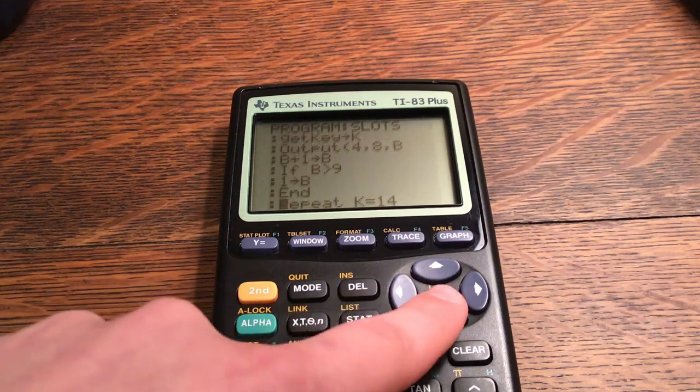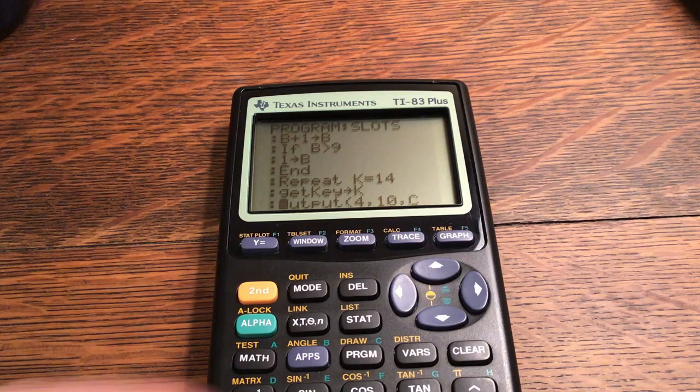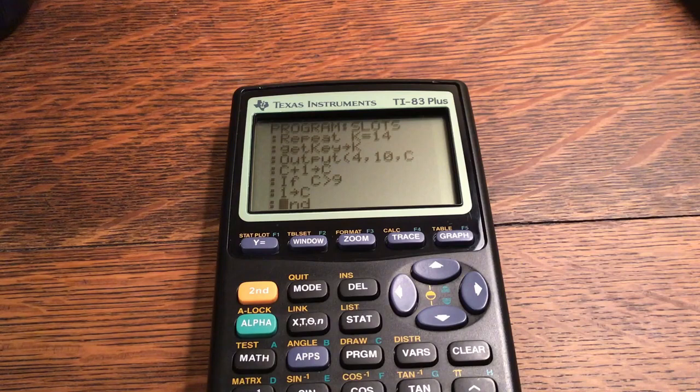Repeat until K is equal to 13. Get key stored to K. Output four comma eight comma B. B plus one stored to B. If B is greater than nine, one stored to B. End.